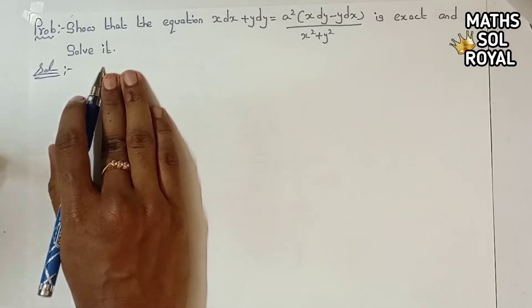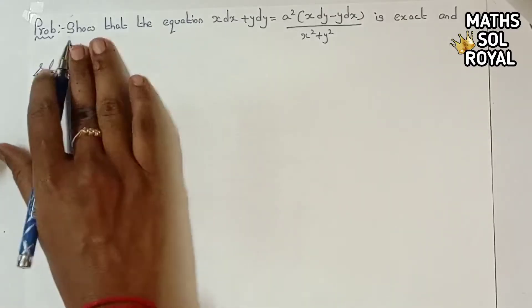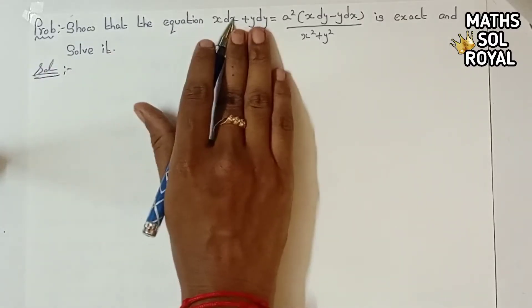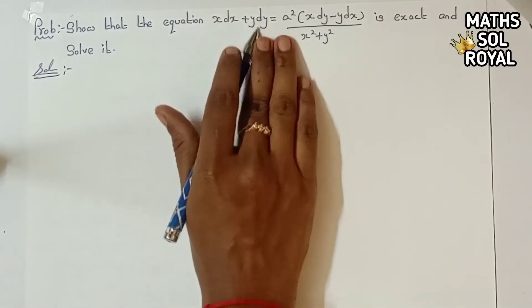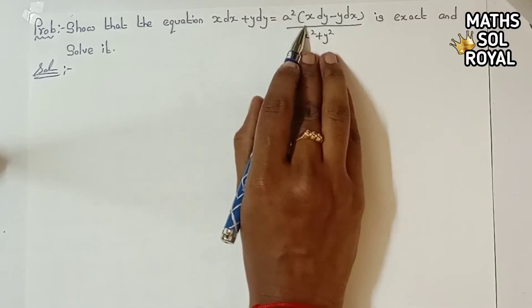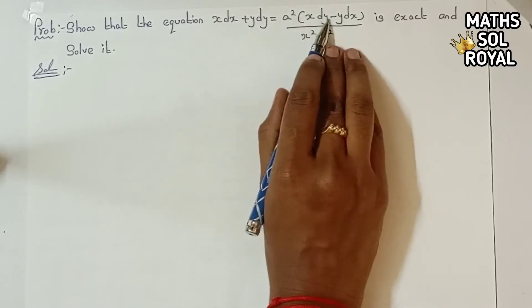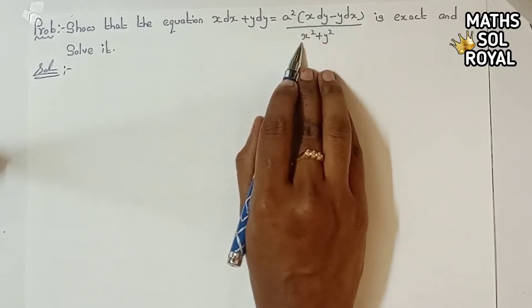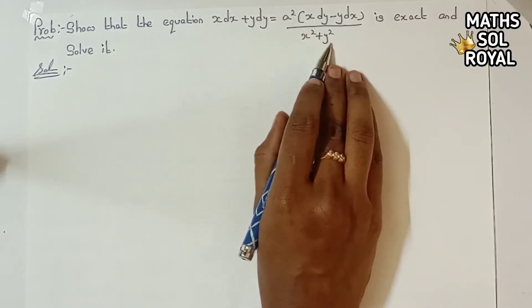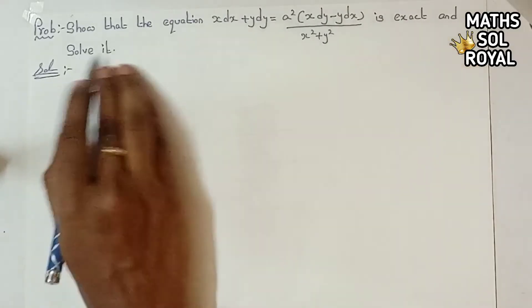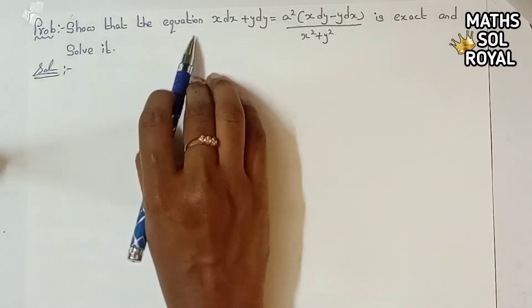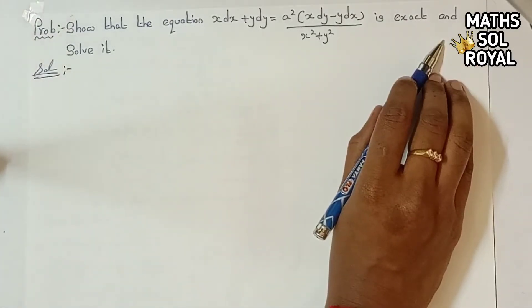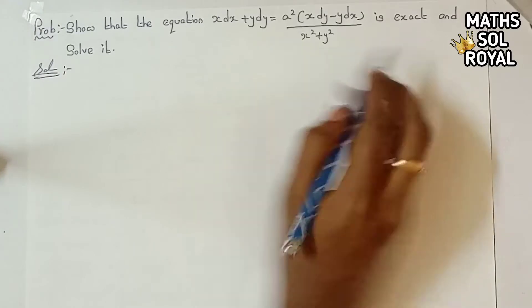Welcome to MassSolRoyal. Let us see the question: show that the equation x dx + y dy = x² (x dy - y dx) / (x² + y²) is exact and solve it. It's an exact differential equation and you are given.